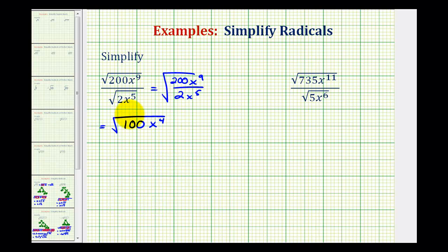And now the radicand is a perfect square. To show this, we can rewrite this as the square root of 100 is equal to 10 times 10. And then x to the fourth is equal to x to the second times x to the second.